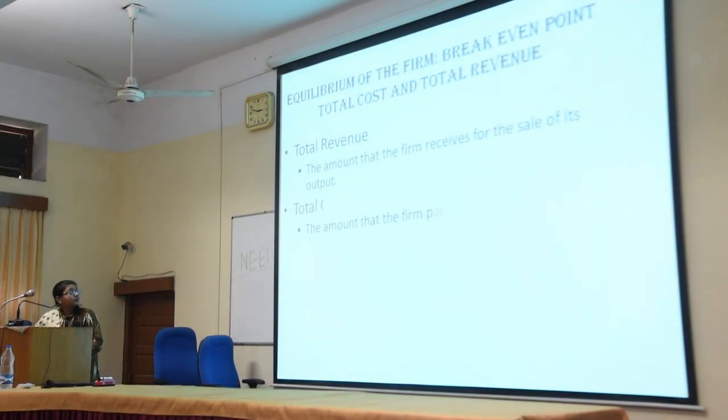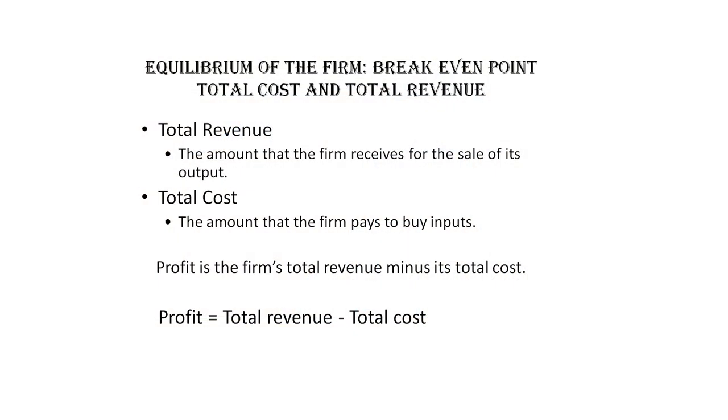For equilibrium of the firm, we need to know three basic concepts. First is total revenue — the revenue a firm gets by selling all its products at a given price. The total revenue curve is an upward sloping straight line because price is the same but quantity varies. Second is the total cost curve — the amount the firm has to incur in producing the whole output. The profit is the difference between total revenue and total cost, and the firm's objective is to maximize that difference.